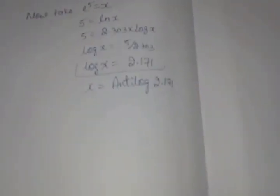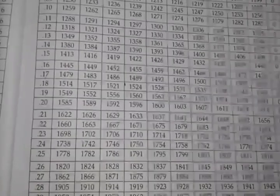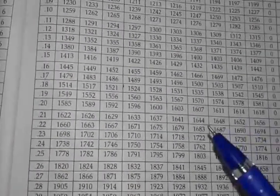Here this is called an anti logarithmic table. Now we want the value of antilog of 2.171. Search your friends. The antilog of 2.171.